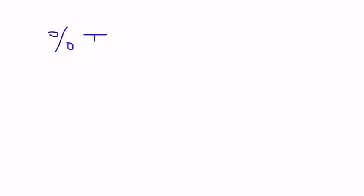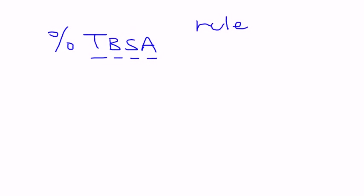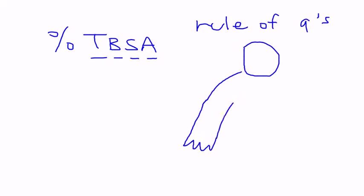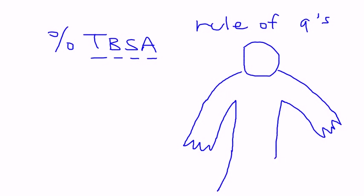In the formula you have TBSA — Total Body Surface Area. How do you figure that out if somebody comes in with a burn? It would be quite difficult, especially in the acute setting. Fortunately, there's something called the Rule of Nines, which helps figure out the total body surface area involved in the burn. I'll draw a quick diagram to illustrate the body parts and tell you what each of the Rules of Nines are.